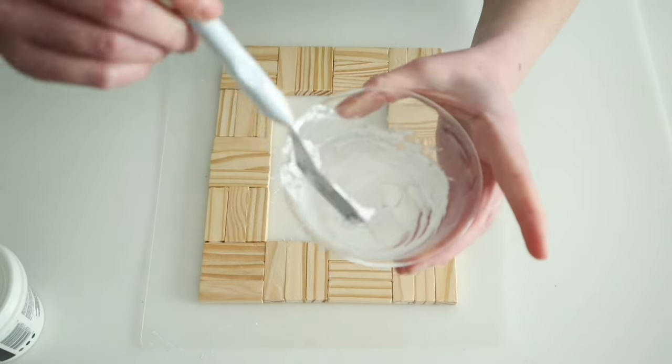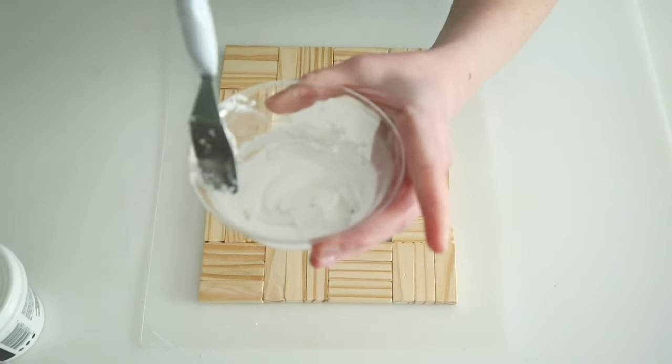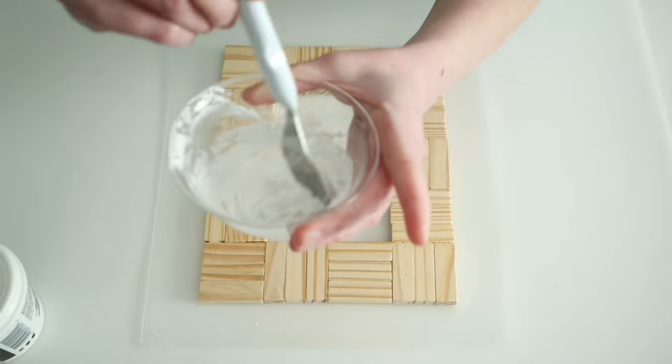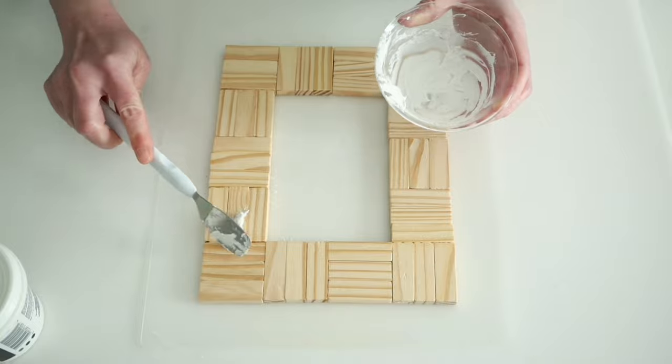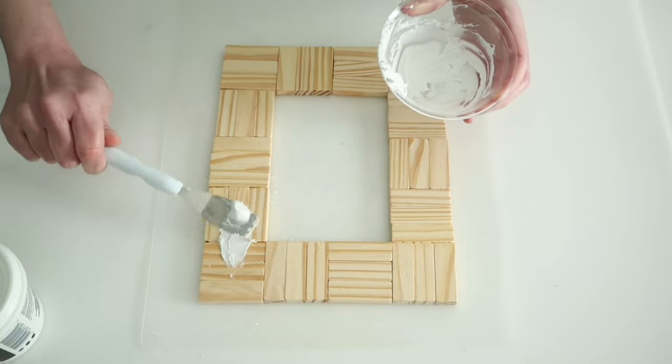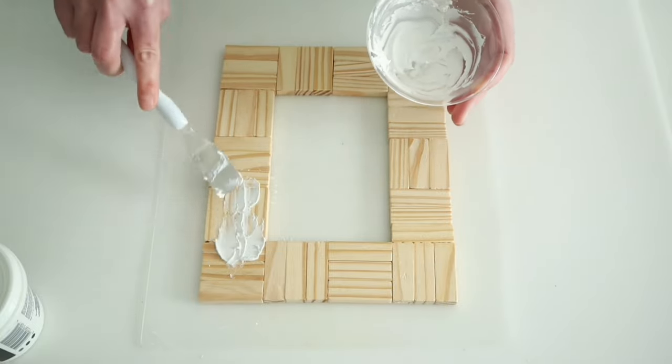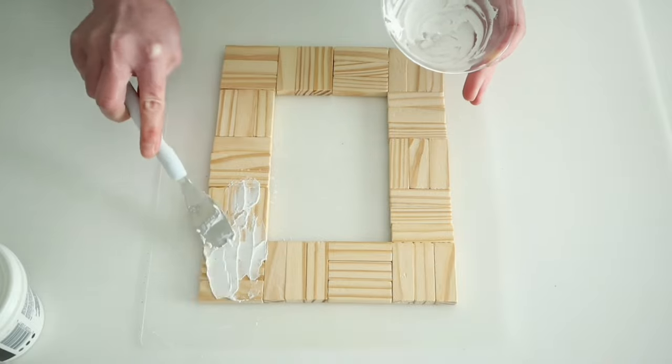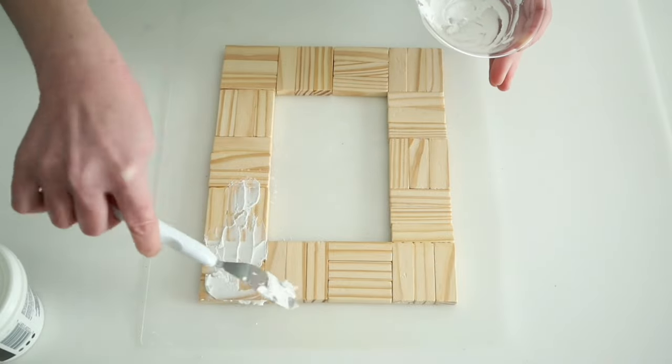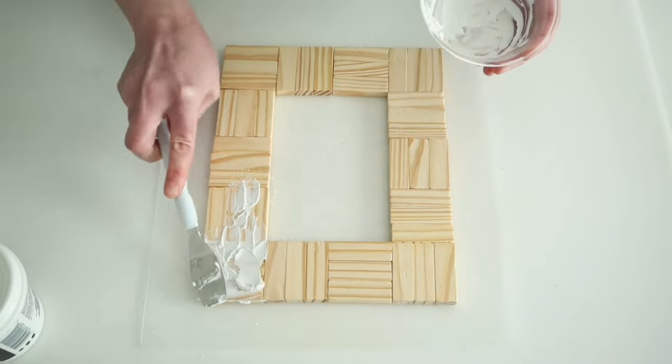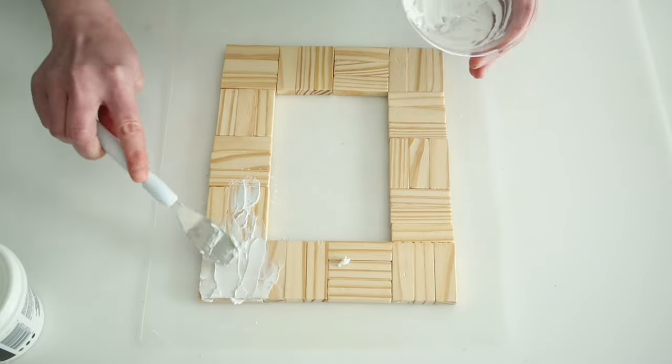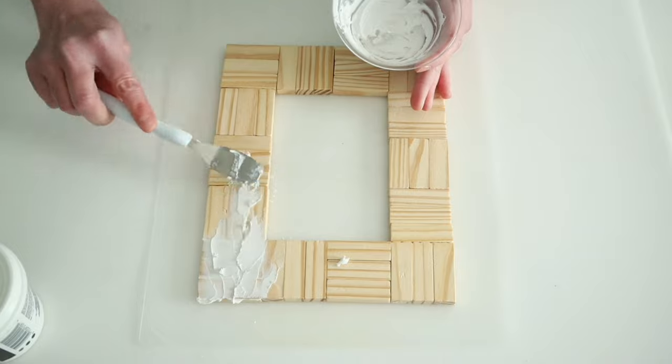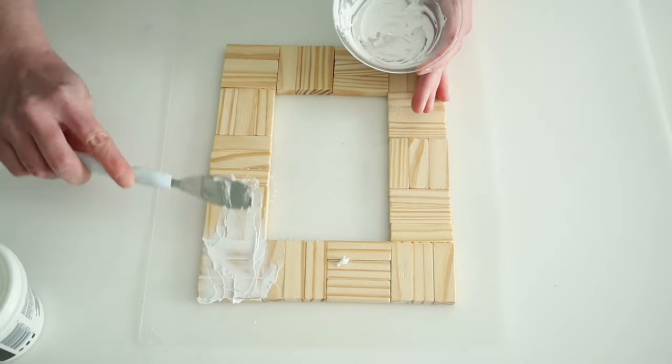So we are again going to be using some of that Dollar Tree spackling, and again, I put it in a little plastic container and just added a few drops of water. And when I say a few drops, it's literally a few drops because you don't want this to be too watery. You just want it in a paste, and I'm just going to take that same little spatula, Cricut spatula, whatever it is, and I'm going to spread this all over my frame.